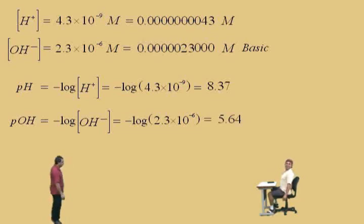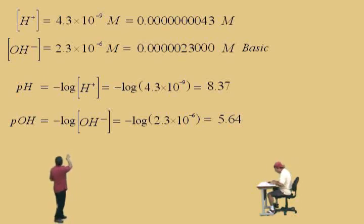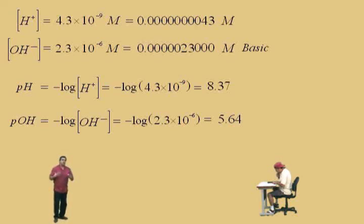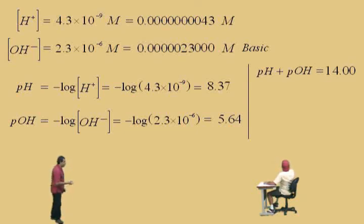Now remember, we have all our information: hydrogen ion concentration, hydroxide ion concentration, pH = 8.37, and pOH = 5.64. Suppose we use the fact that the sum of pH and pOH equals 14.00 — let's verify that.